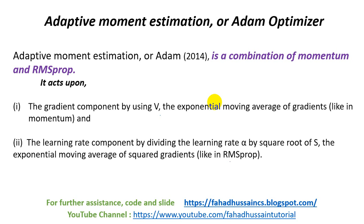Adaptive Moment Estimation is actually called Adam. This is from 2014, so it's not that old. This optimizer is a combination of Momentum and RMS Prop.